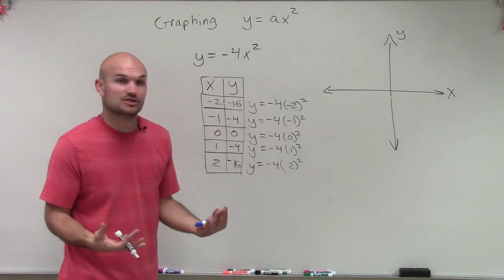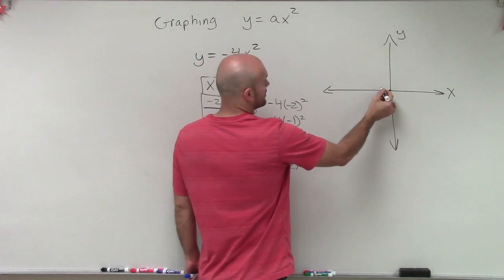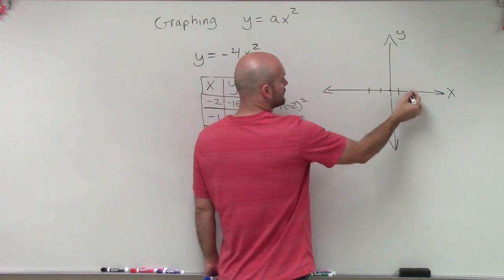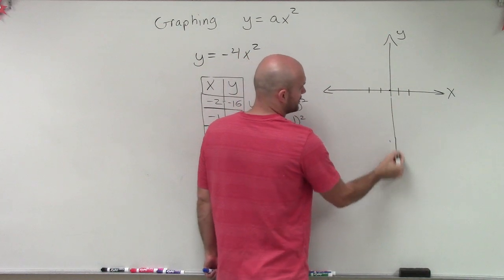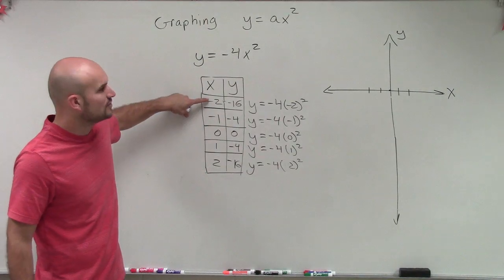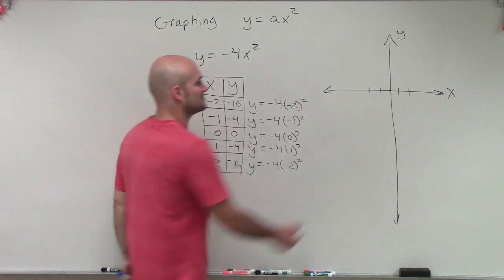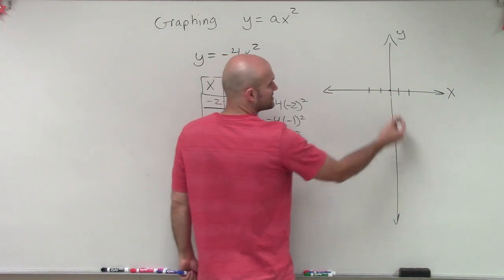So the first thing we need to do is graph our coordinates. I chose x values of 0, negative 1, and negative 2, and positive 1 and positive 2. And I know this is going to go a little bit longer down, so I'm going to extend this. So at negative 2, if the x-coordinate is negative 2, that means my y-coordinate was negative 16. So I go over negative 2, and now I need to go down negative 16.